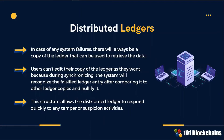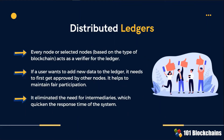If a user tries to force an edit in its copy of the ledger without the consent of the other network nodes, these nodes will recognize a forced ledger entry. After comparing the data that they have synchronized in their respective ledgers, they will identify the brute force entry attempt and nullify it. In essence, if a user wants to add new data to the ledger, it needs to first get approved by the other nodes.